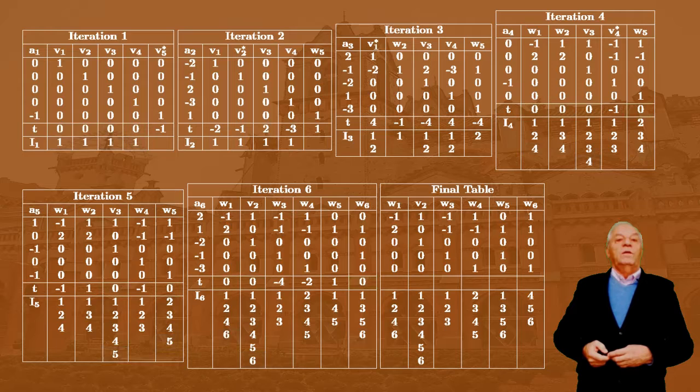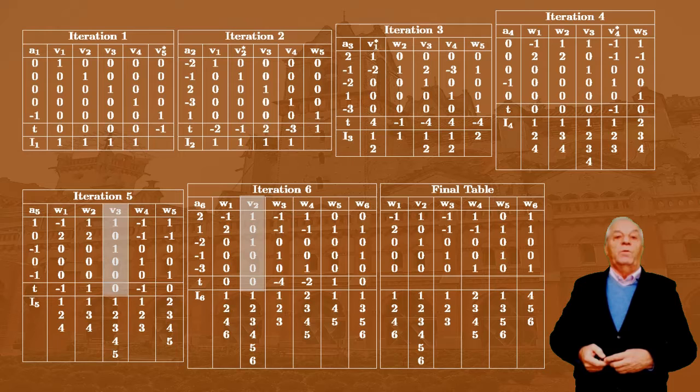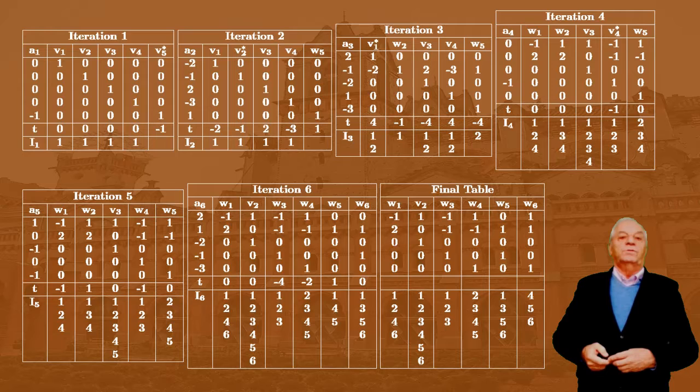Next, if a pivot column exists, we apply the algorithm to get the dual cone, which produces the table in iteration 2. In iterations 1, 2, 3, and 4 we have pivot columns and apply the corresponding procedure. However, in iterations 5 and 6, no pivot column exists because the V columns have an associated zero scalar product. In these cases, we need to apply a different procedure to obtain the dual cones of the cones generated by the previously introduced vector generators.